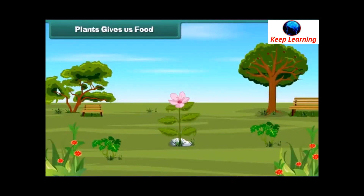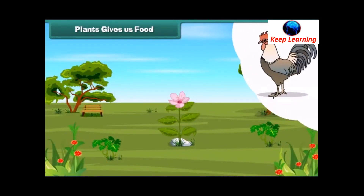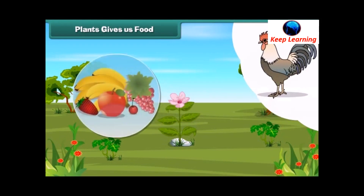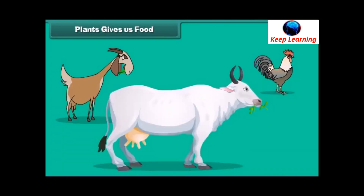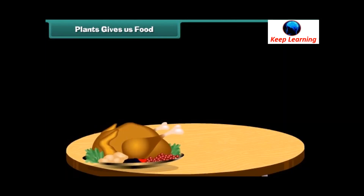We get food from plants and animals. Plants give us fruits and vegetables — they are good for us. Animals give us meat, eggs, and milk.